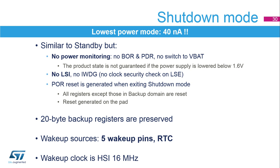The shutdown mode is the lowest power mode of the STM32G0, with only 40 nanoamps at 3.0 volts. This mode is similar to standby mode but without any power monitoring. The power-down reset is disabled and the switch to VBAT is not supported in shutdown mode. Hence, the product state is not guaranteed in case the power supply drops below 1.6 volts. The LSI is not available, and consequently the independent watchdog is also not available. A power reset is generated when the device exits shutdown mode. All registers are reset except those in the backup domain, and a reset signal is generated on the pad. The 20-byte backup registers are retained in shutdown mode. The wake-up sources are the five wake-up pins and the RTC events, including tampers.